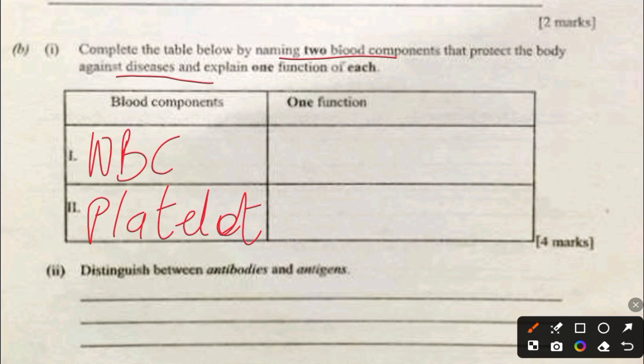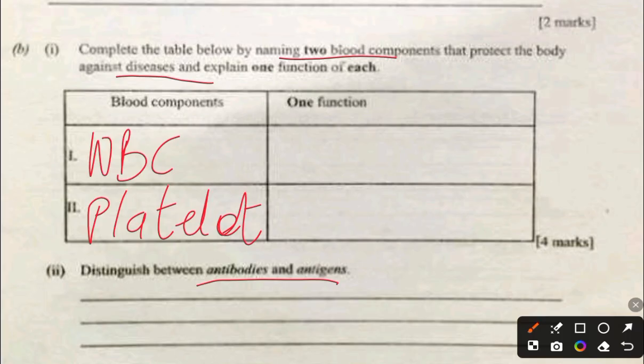Distinguishing between antigens and antibodies: antibodies are proteins produced by the immune system that bind to specific antigens to neutralize them. Antigens are the disease-causing agents. So antigens trigger the immune response, and antibodies are the proteins in the body that bind to and neutralize those antigens.